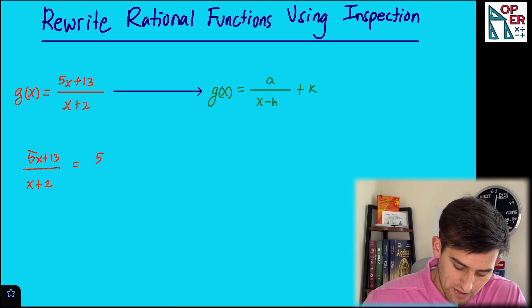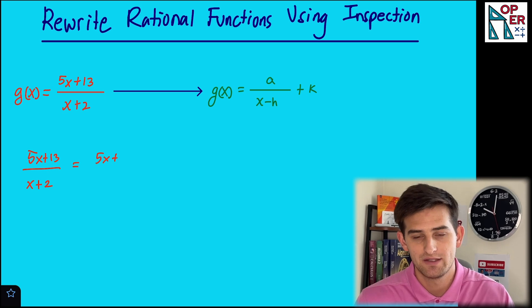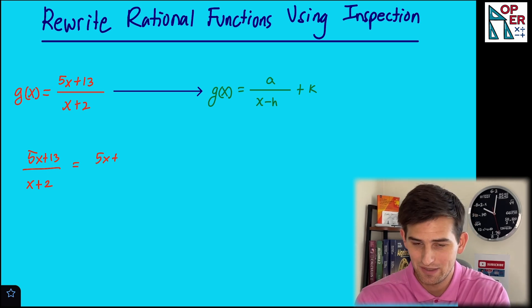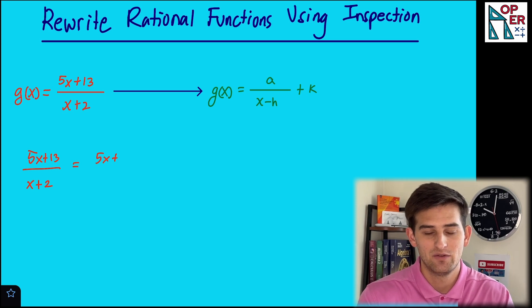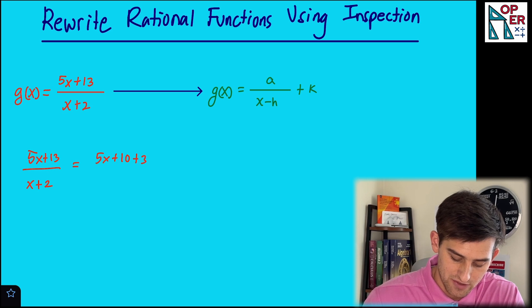So if I think about 5x plus 13, how could we break apart 13 so that if we have an expression 5x plus something, and we factor out a 5, what would give us x plus 2? Well, hopefully you're thinking 5x plus 10 plus 3, and this is over x plus 2.